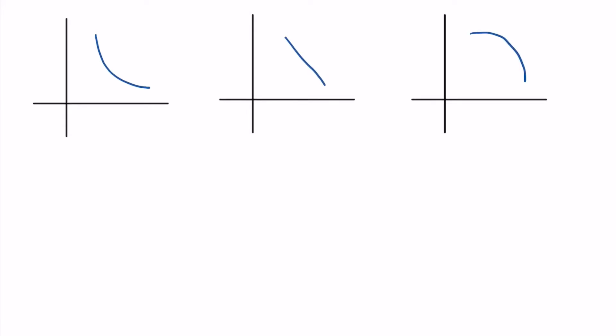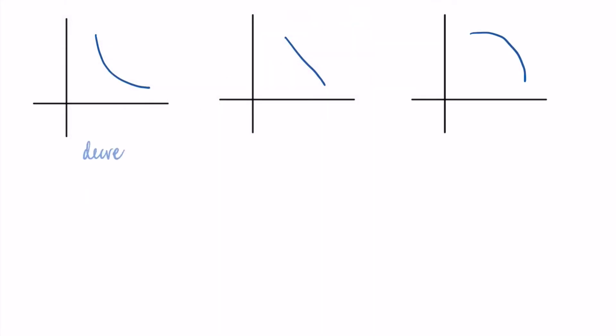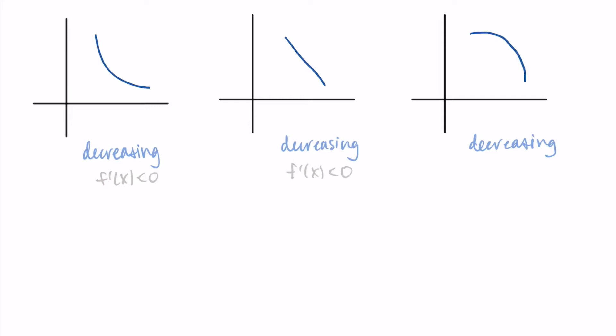Now let's try this with some decreasing graphs. I'm going to draw three pictures here — similar to the previous graphs, except this time they all have negative slopes; they're all decreasing. Remember, this is just a little portion of a function. For all of these graphs we're going to have a negative first derivative since the function is decreasing, but let's go through each one and see how the slopes are changing.